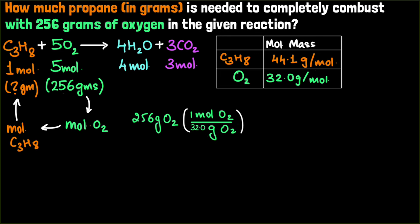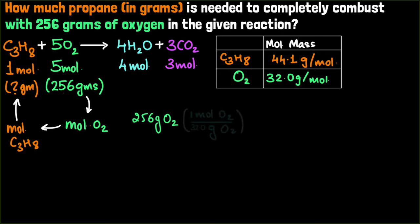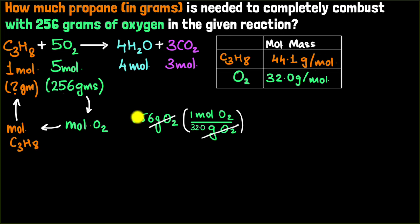To show the power of dimensional analysis: if we accidentally wrote the conversion factor as the reciprocal — 32 grams per mole instead of one mole per 32 grams — the units immediately reveal the mistake because grams would not cancel out. By writing out the full units, like grams of O₂ and moles of O₂, dimensional analysis keeps us on the right track. Now this expression represents the moles of oxygen. Let's not calculate it yet — let's write out the whole chain and then plug everything into the calculator at once.